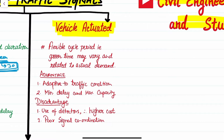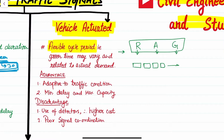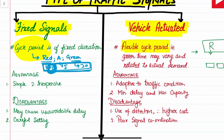While in the vehicle-actuated type of traffic signals, we have a flexible cycle period. This means that for red light, amber light, as well as for green light, the cycle period may vary. If there is too much traffic on the road, the traffic signals will adjust accordingly so as to ensure less waiting time as well as safe passage of vehicles along the road.